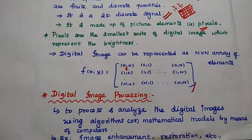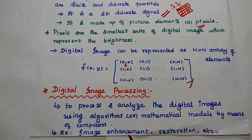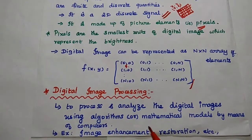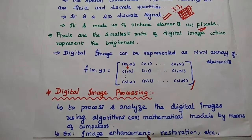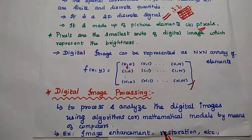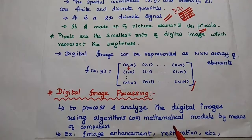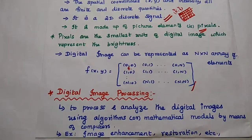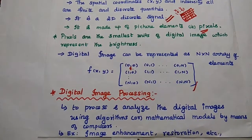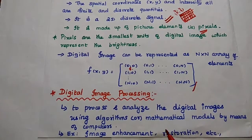So next, digital image processing — to process and analyze digital images using software algorithms or mathematical models, by using digital computers and other digital devices. So the processing of digital images which is done by digital devices is known as digital image processing. For example, image enhancement and image restoration are kinds of operations in digital image processing methods.